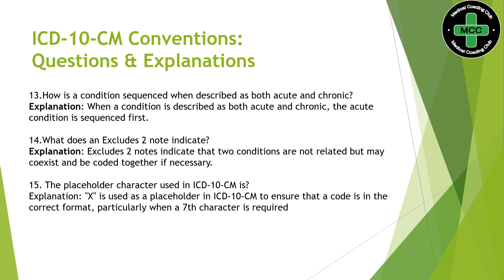What is the placeholder character, and which one do we use? We use X as the placeholder character. X creates a space for future expansion — we might not have a particular code now, but one may be added in the future. So we use X to complete the code wherever up to seven characters are needed, placing it in the middle of the code.